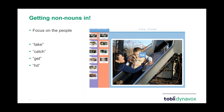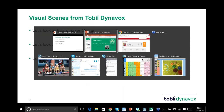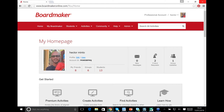Getting the non-nouns in: if we focus on people we can work on getting things like 'take,' 'catch,' 'get,' 'hit' — some good verbs involved — rather than just taking a Kim's game approach where we photograph lots of different objects and name them. Getting activity into the picture is a really great idea: getting on slides, swings, climbing, interacting with your cat — all good things to think about when creating your scenes.